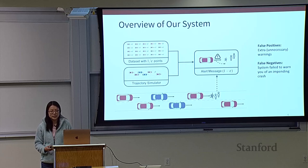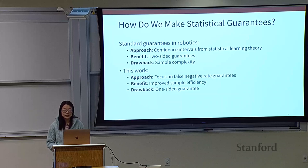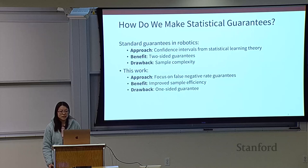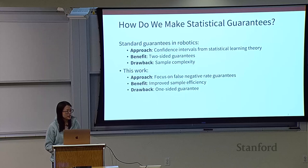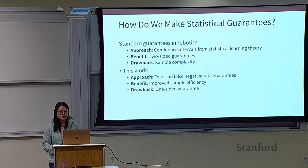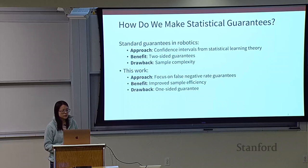Our system makes these guarantees in a very sample-efficient way. When people think about guarantees in robotics, we typically think about confidence intervals and accurately estimating error rates with statistical learning theory. But this method has a drawback: sample complexity — if you want confidence intervals, you need a lot of data. Instead, we sacrifice trying to estimate the false positive and false negative rates exactly, and consider a more task-centric notion where we care more about false negatives. This one-sided guarantee is what's important in safety-critical systems. We can use conformal prediction, a statistical tool that produces prediction sets such that the true label is guaranteed to be within the set with 1 minus epsilon probability.